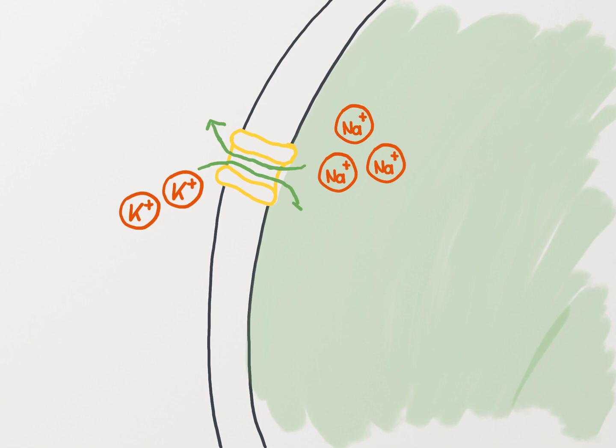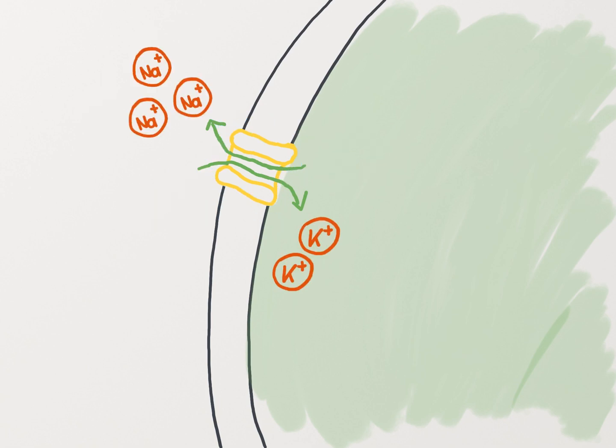in which ATP is hydrolyzed to move ions against their concentration gradient. For each ATP molecule that is being hydrolyzed, the pump moves three positive sodium ions out of the cell and two positive potassium ions into the cell.